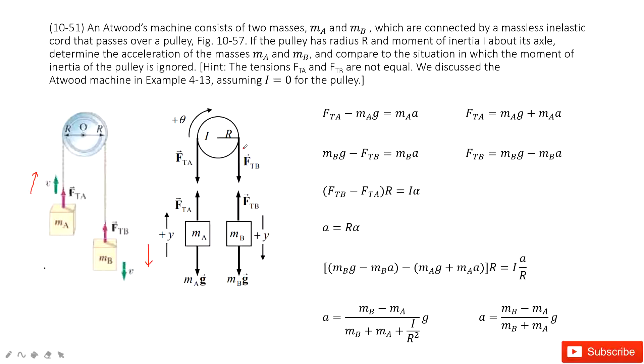So how can we do that? First one, we do force analysis for each object. See, for A, we must consider gravity and tension from the string. For B, there is gravity and tension of the string.